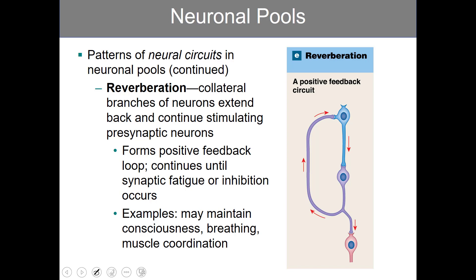The last pattern is reverberation. This is when you have a collateral — when your axon branches, it gives rise to a collateral. The collateral extends back to the originator of the message while also carrying the message forward to the postsynaptic cell. The significance of reverberation is that it forms positive feedback loops, which will continue to circle until some event occurs.